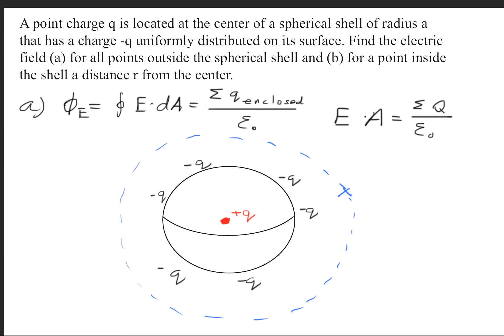Inside this Gaussian sphere, we have a plus Q and a minus Q. So, plus Q and minus Q all over epsilon naught.